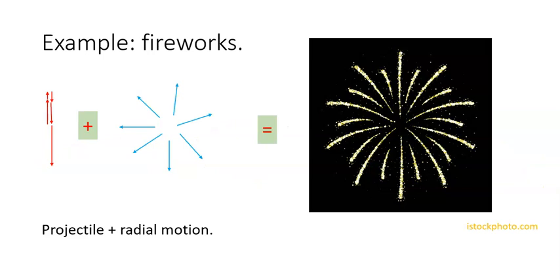Here is another example. The palm tree shape, often seen from exploding fireworks, is also a superposition of the radial explosion outward from the center of mass and the freefall projectile motion of the mass.